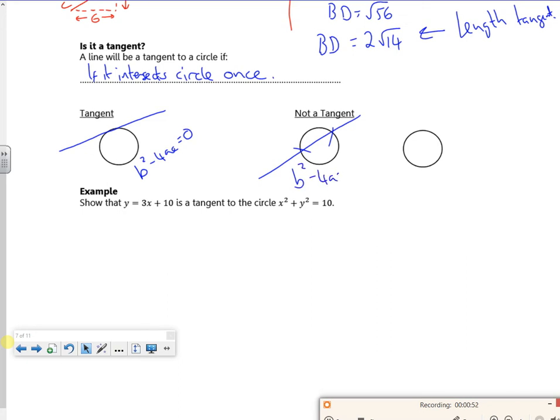This one here I'm saying that b squared minus 4ac is greater than zero, and this one is saying that b squared minus 4ac is less than zero. So I'll add on here that b squared minus 4ac is zero.